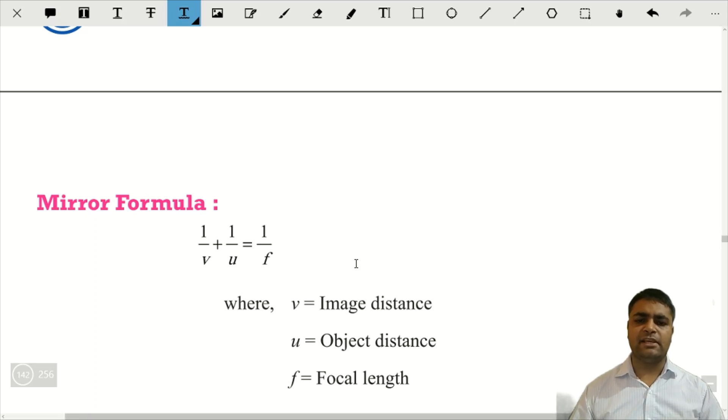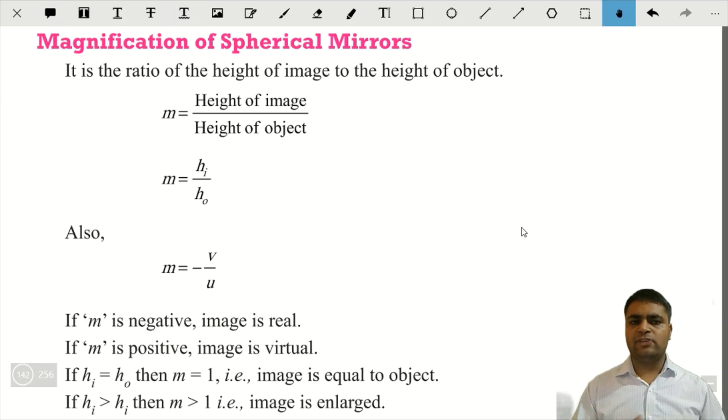Abh yeh baat humne padhi thi ki focal length joh hooti hai, woh radius of curvature ka half hooti hai. Toh agar humein radius of curvature pata ho, toh hum focal length nikaal sakti hai. Iske alawa hum focal length yahan se bhi nikaal sakti hai.